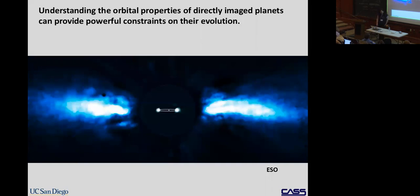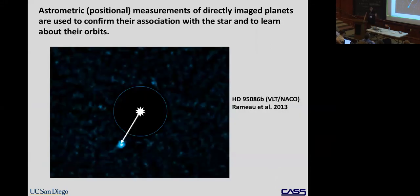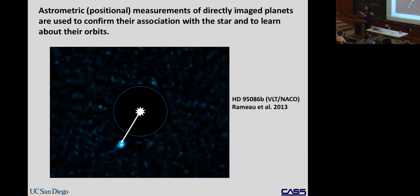A few days ago you heard about how we need relatively precise astrometry just to confirm that planets are really bound to the star. A lot of telescope time has been spent following up little dots next to stars that turn out not to be real — they're background objects. So the first thing you want to do is confirm association, and then learn about the orbits.